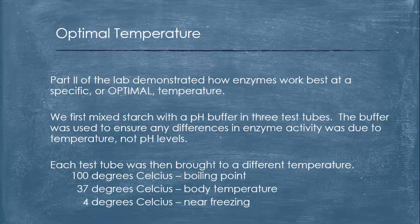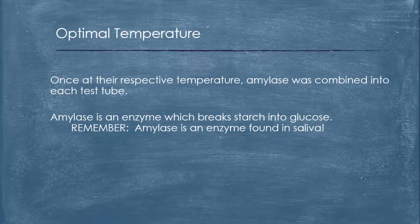Remember, we put one in the boiling water at 100 degrees Celsius, then we had one in the water bath that was 37 degrees, and then we put one on ice and that was kept at near freezing, four degrees Celsius. Once at their respective temperature, amylase was combined into each test tube. Remember, the amylase was also brought to the temperature so it didn't alter the temperature. Amylase is the enzyme which breaks starch into glucose. Starch is a long chain of sugars; the enzyme breaks it down into the individual glucose components. Remember that amylase is the enzyme found in your saliva.